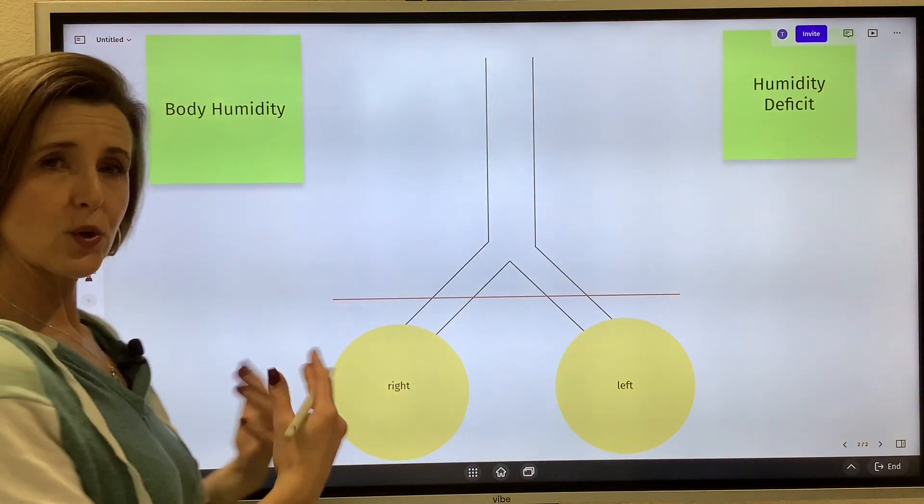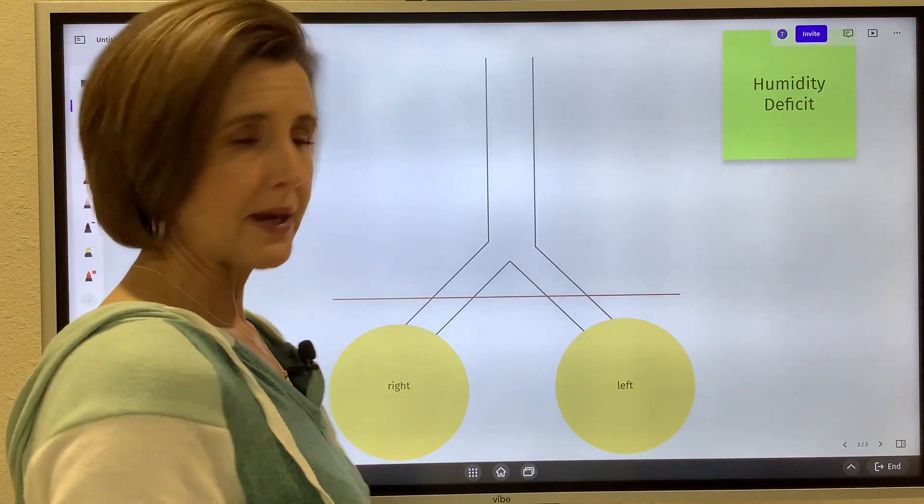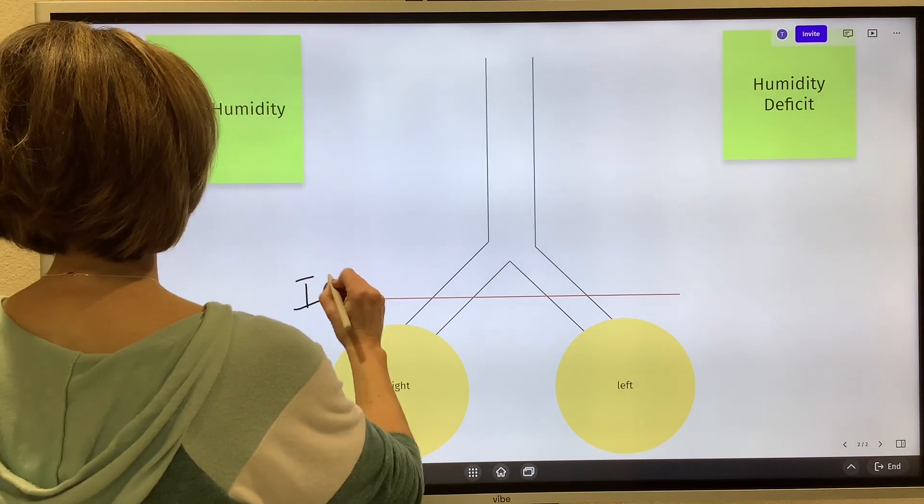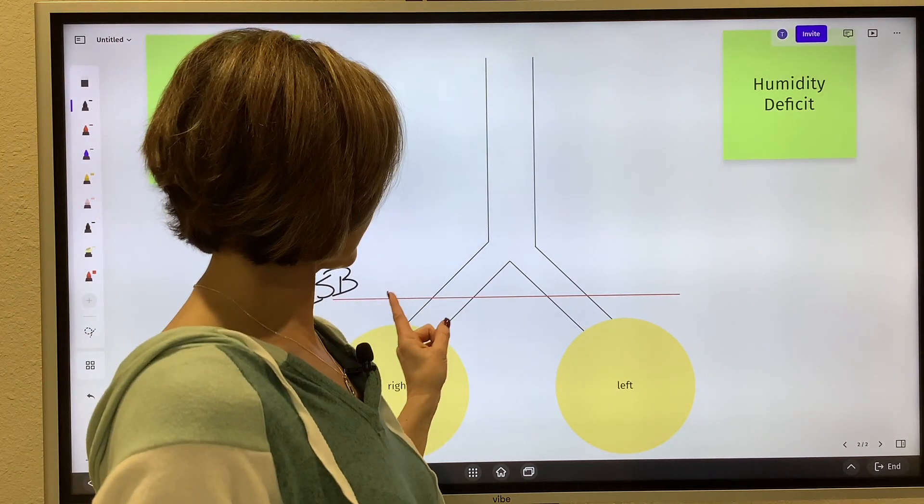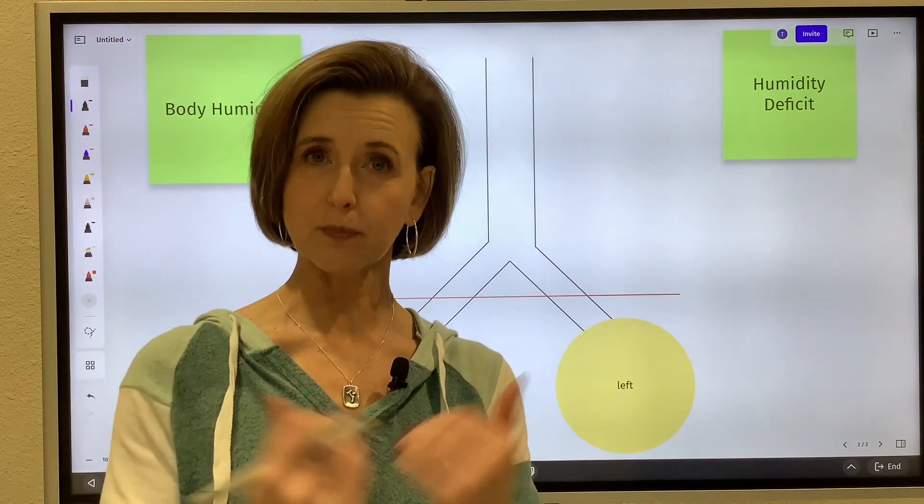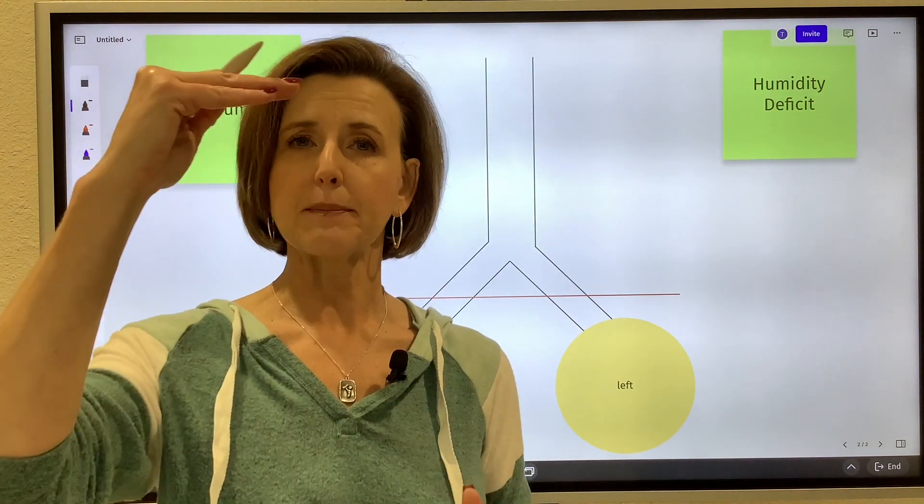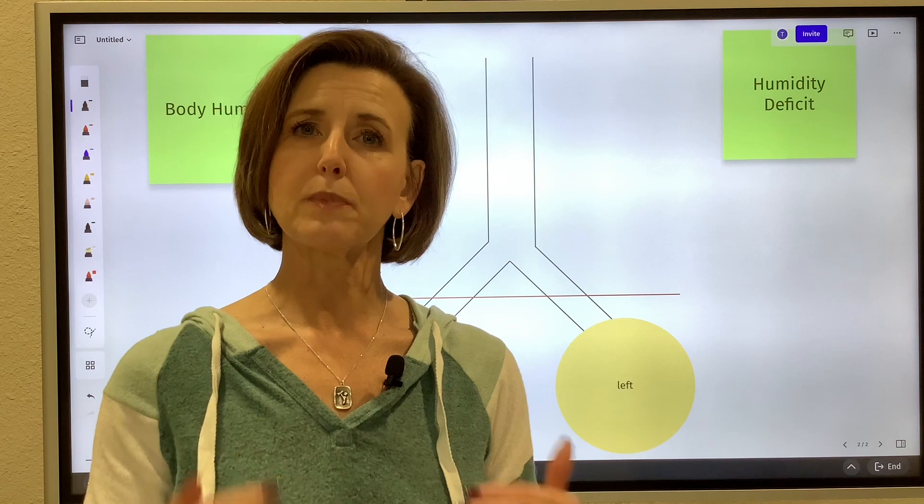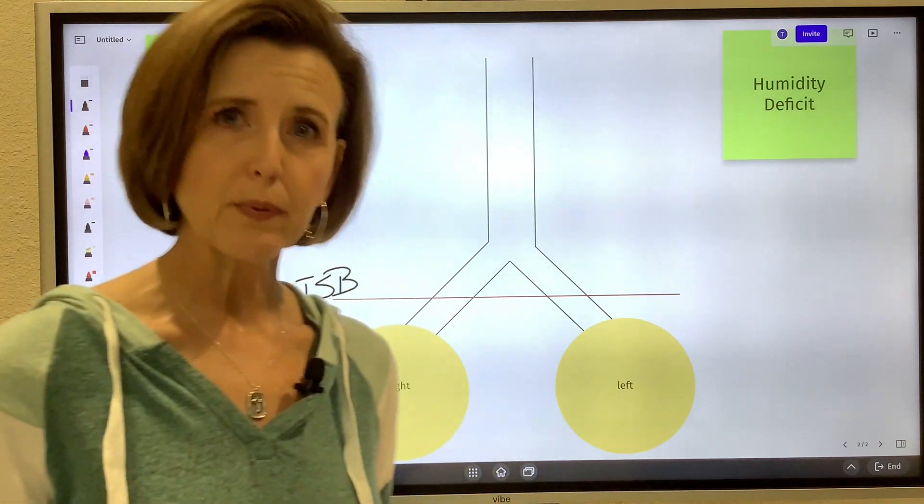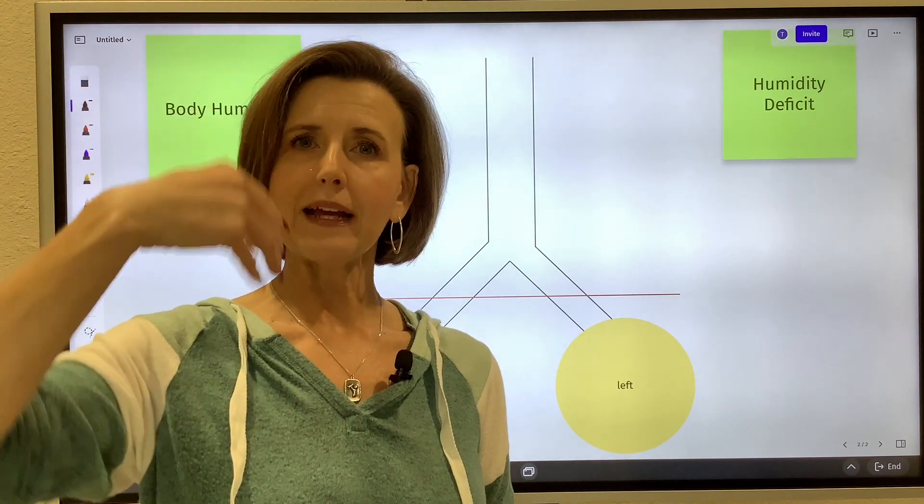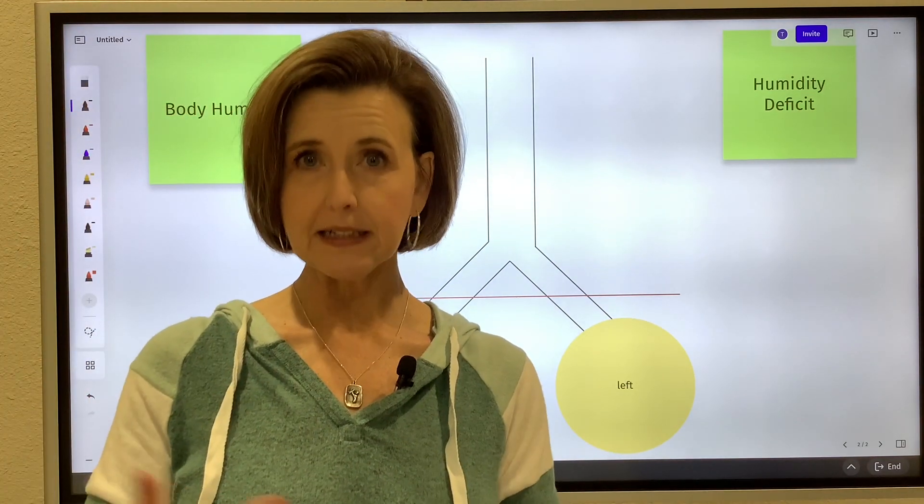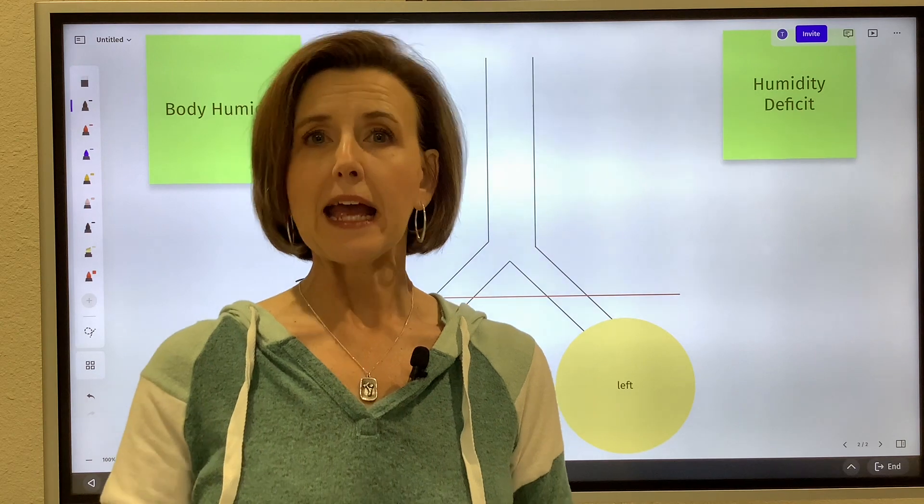This red line is called the isothermic saturation boundary, ISB is how we abbreviate it. Basically, this boundary or this place in the lung is about five centimeters below the carina, and what it represents is as we inspire air, how air travels down our airway and it gets warmer.